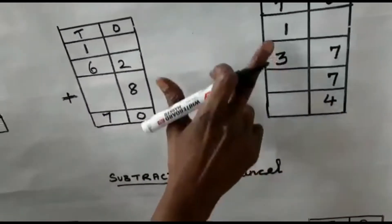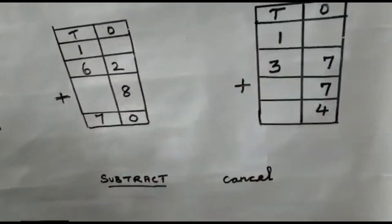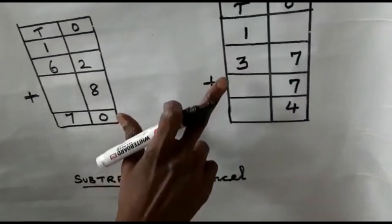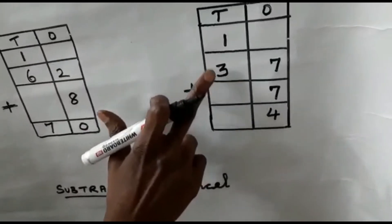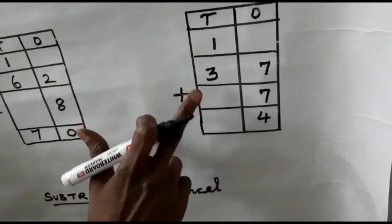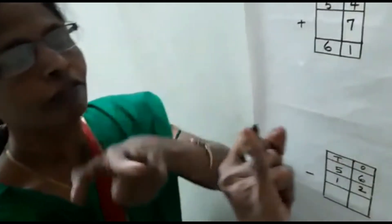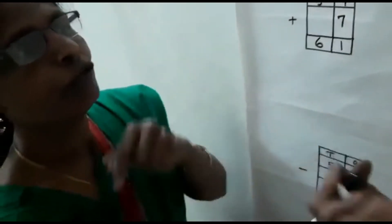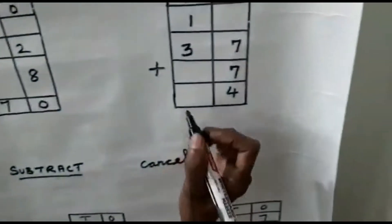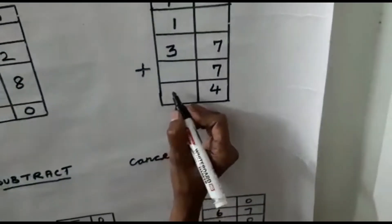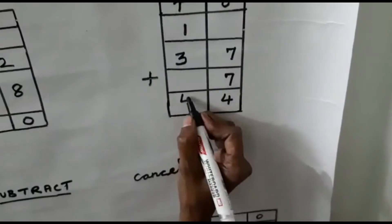Now 3 and 1 you must add. Which is the bigger number? 3 and 1 — 3. So keep 3 in your mind and 1 on the finger. After 3 — 4. Now 44 is the answer.